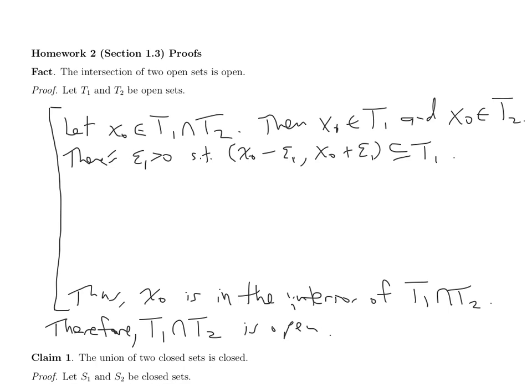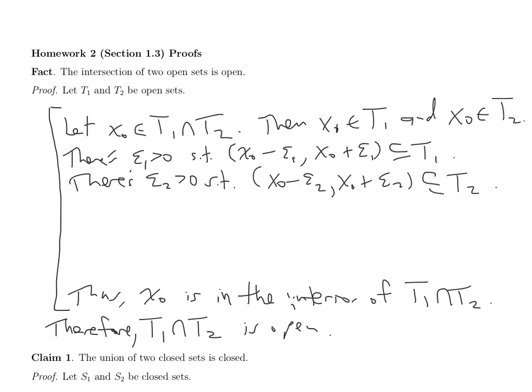That's because T1 is open. But also T2 is open. So the same thing goes for T2 — there's a neighborhood around X0 that's completely contained in T2. Now, if a set is completely contained in T1 and completely contained in T2, then it's completely contained in the intersection. So you can start to see how I'm going to conclude that X0 should be an interior point of T1 intersect T2.